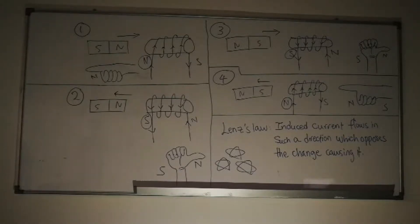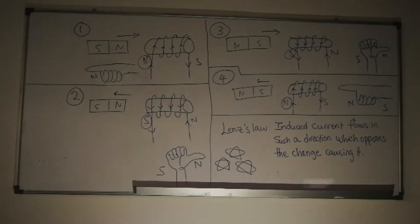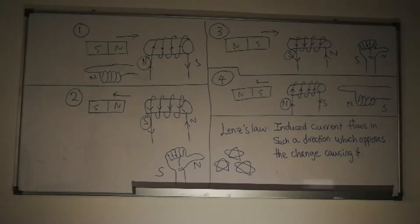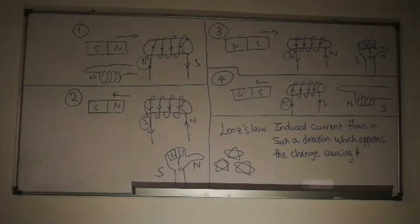So, the induced current must flow in a way that causes the left side to be the north pole. By applying the right hand grip rule, the induced current will flow from the north pole to the south pole.